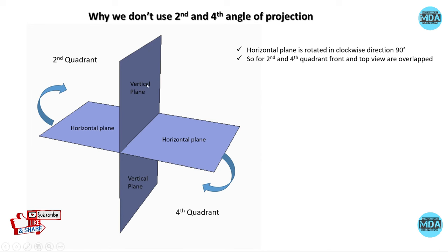In the first angle method of projection, we get the front view on the vertical plane and the top view on the horizontal plane. In the third angle of projection, we also get the top view on the horizontal plane and the front view on the vertical plane. After rotating the horizontal plane clockwise, in third angle projection we get the top view on the top and the bottom view on the bottom. For the second and fourth angle, this rotation causes the horizontal plane to overlap with the vertical plane.